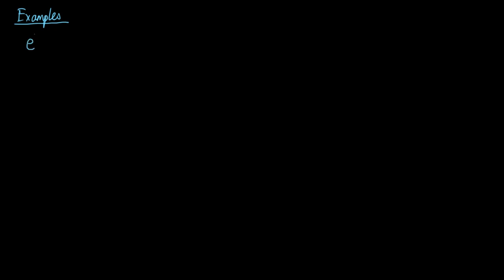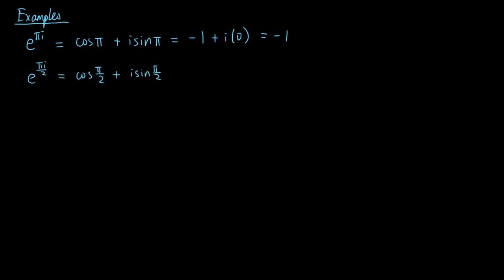Let's look at some examples of complex numbers in polar form and convert them into standard form. First, e to the πi equals cos π + i sin π, which equals −1 + i·0, which is just −1. Next, e to the πi/2 equals cos(π/2) + i sin(π/2), which equals 0 + i·1, which is just i.